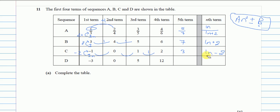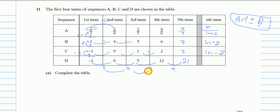Part d looks complicated. The sequence starts at -3, and the differences are 3, 5, 7 — increasing by 2 each time. If we add 9 next, we get 21. Because the adding itself is not constant, we take the common difference of the differences — which is 2, 2, 2 — the same each time.